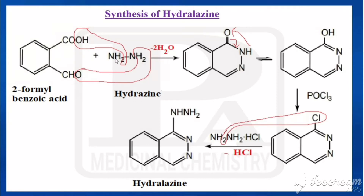2-Formylbenzoic acid is treated with hydrazine (NH2-NH2). By the addition of hydrazine, the OH combines with H and is removed as water. Similarly, this oxygen combines with two hydrogens and is removed as water, so totally two molecules of water are removed.